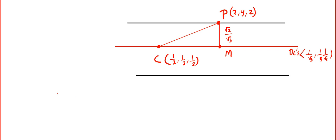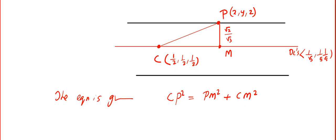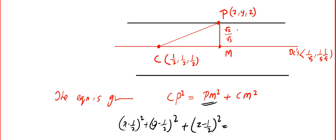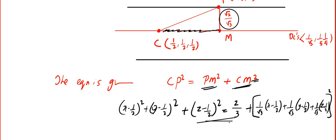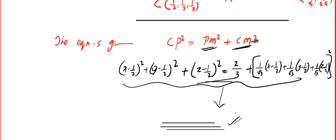Ready to apply the formula. The equation is given by CP² = PM² + CM². CP is the distance from center to locus point. That gives (x − 1/2)² + (y − 1/2)² + (z − 1/2)² = 2/3 + CM². CM is the projection of CP on the axis, equal to [l(x − 1/2) + m(y − 1/2) + n(z − 1/2)]². Simplification is your homework — do it carefully to get the required cylinder equation.